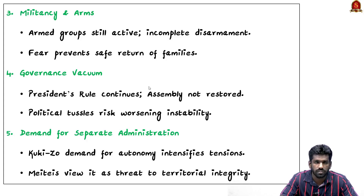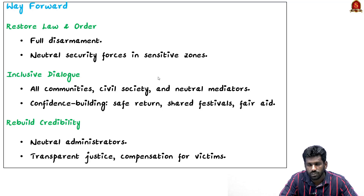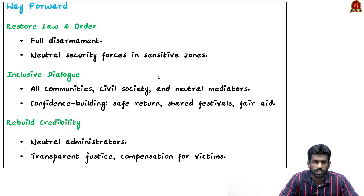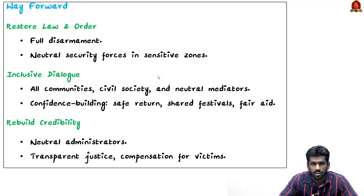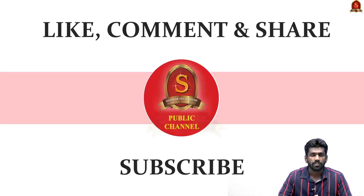The way forward includes: reestablishing law and order through complete disarmament of all insurgent and militant groups in both valleys and hills, strengthening neutral security forces, and preventing community-dominated paramilitary setups. An inclusive peace process should initiate broad-based dialogue involving all communities, civil society, and neutral facilitators. Confidence-building mechanisms — such as safe return of displaced communities, common cultural events, and neutral distribution of aid — should be implemented to encourage reconciliation between communities.